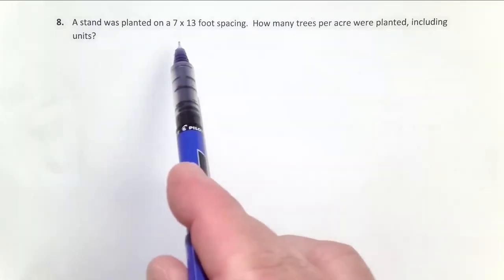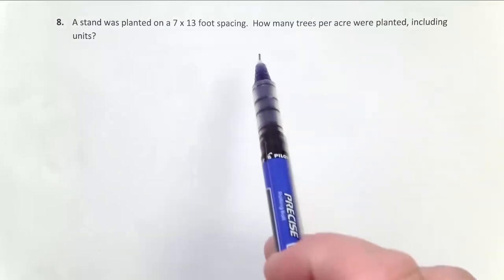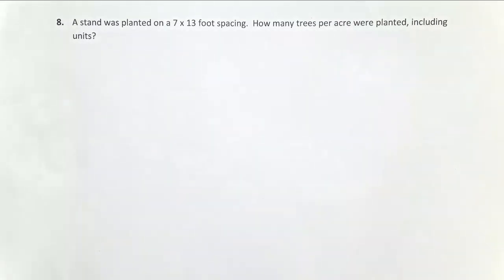In problem 10, we're looking at planting spacing, 7 by 13 feet in our example, and we're going to try and figure out the density of trees that were planted from that spacing.